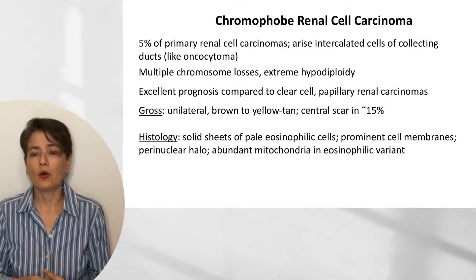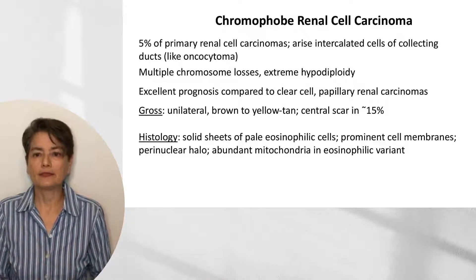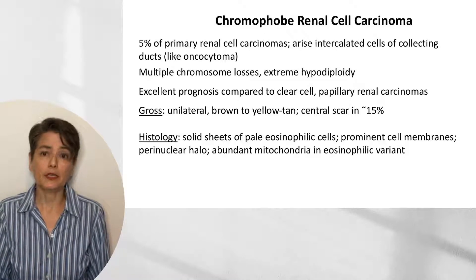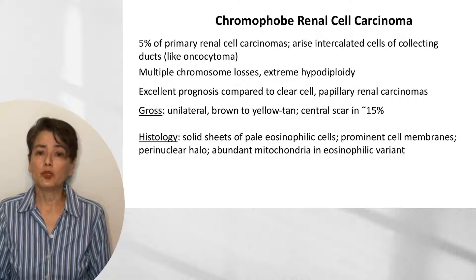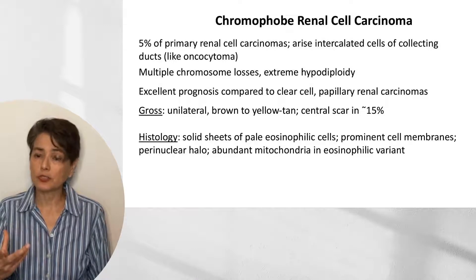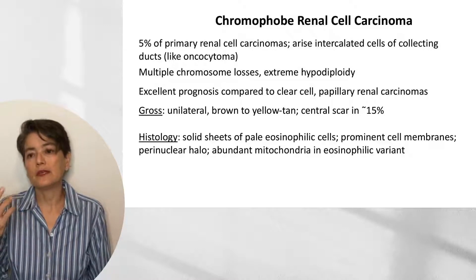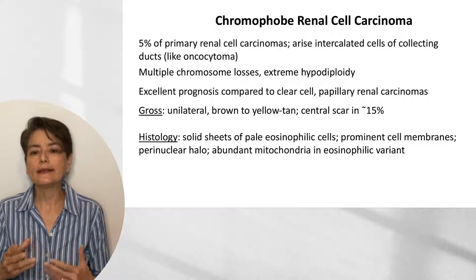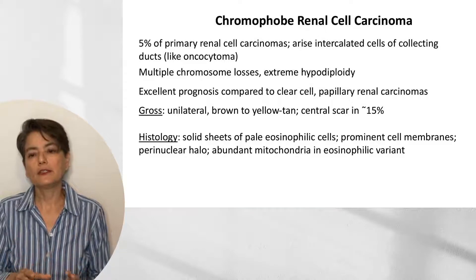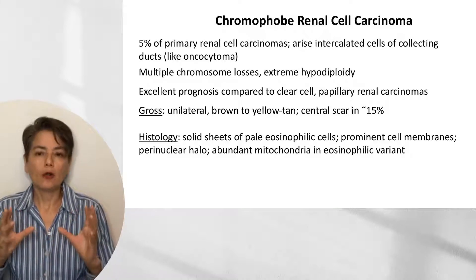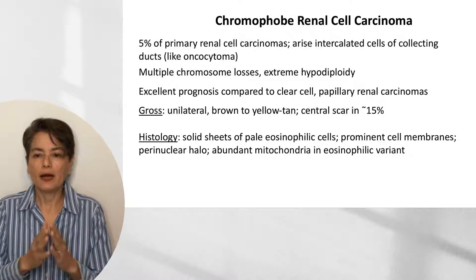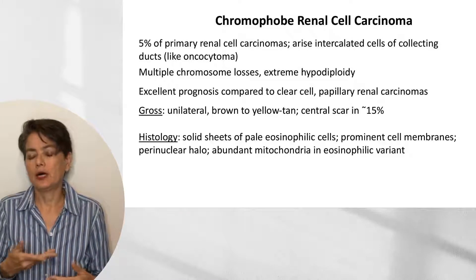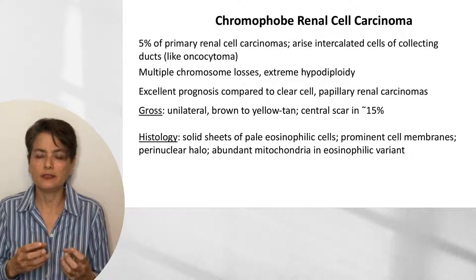Unlike the other two variants, chromophobe RCC tends to have an excellent prognosis, particularly compared to clear cell. Grossly, it will be unilateral, brown to yellow tan, and can have a central scar indicating slow growth. Histologically, we see solid sheets of pale eosinophilic cells characteristically described as having a 'vegetable wall' appearance because the cell membranes are very thick, reminiscent of a microscopic section of corn or lettuce.